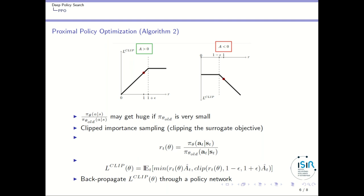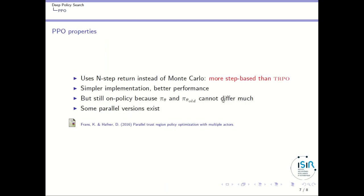And PPO for a long time was, for one year, let's say, was the state of the art algorithm in the reinforcement learning domain. So a few properties of PPO. One point is that instead of using Monte Carlo to compute the advantage, it rather uses some n-step returns. So it's more step-based than TRPO. It gets closer to DPG where you can also use n-step returns based on a replay buffer.